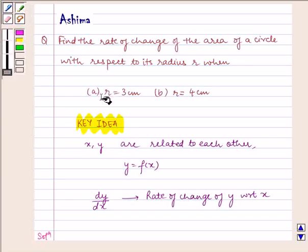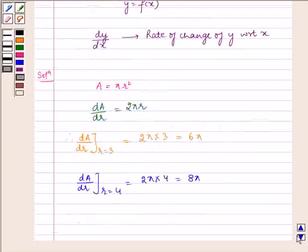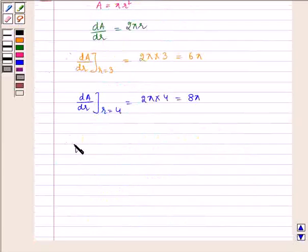Therefore, for r = 3 cm, the area is increasing at the rate of 6π cm² per second.